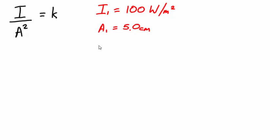What will happen to the amplitude A2 when the intensity decreases to just 50 watts per square meter?